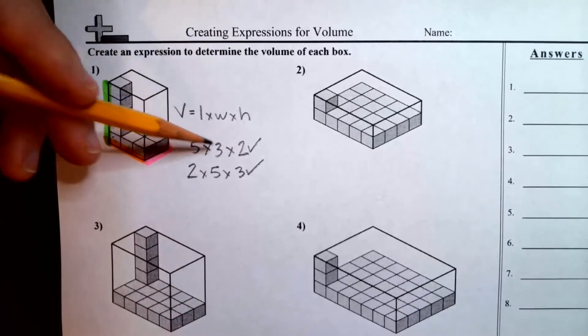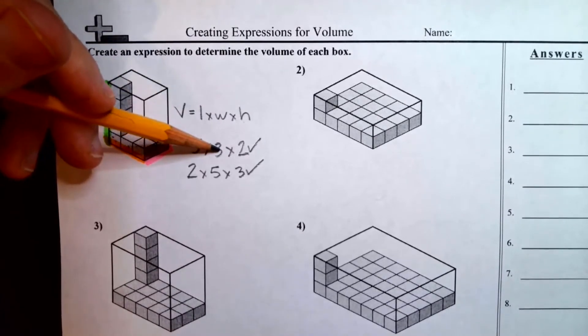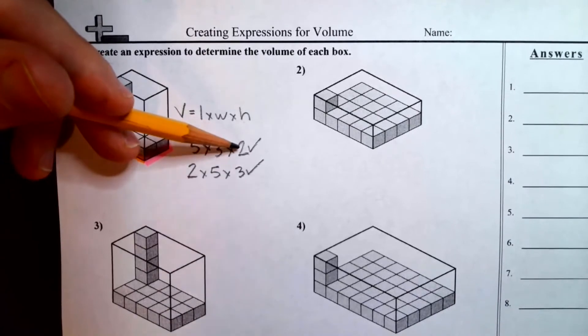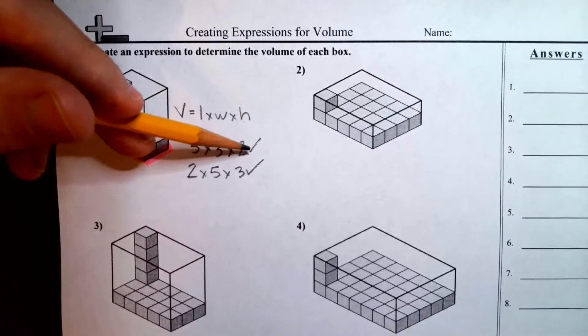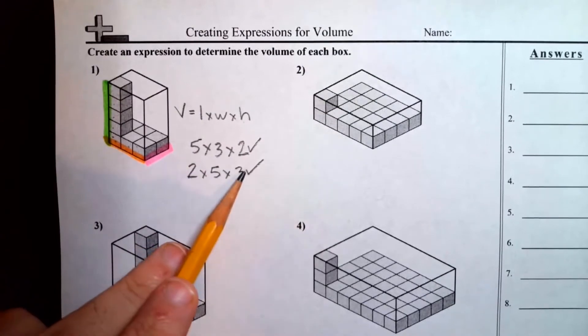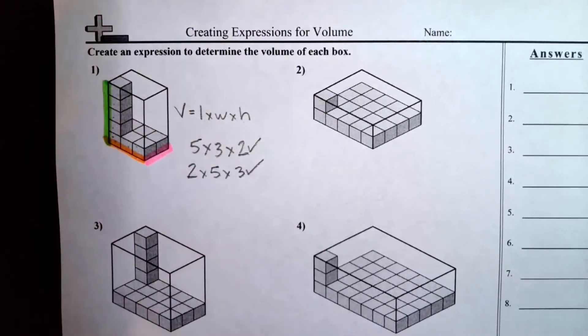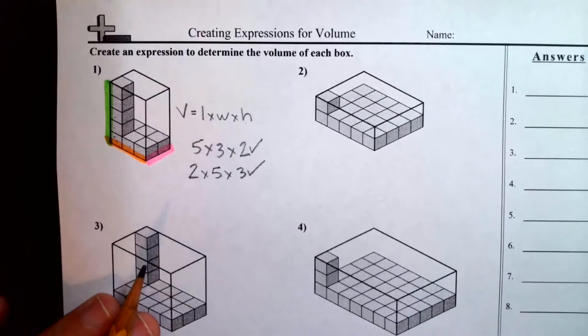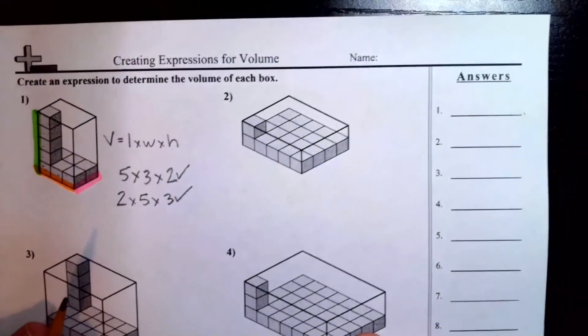So for example, five times three is 15 and then 15 times two. If we double 15, 15 plus 15, we'd get an answer of 30. If we do it this way, two times five is 10, 10 times three also 30. So that's kind of what we're working on. Let's, I'll do a couple more.